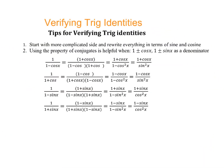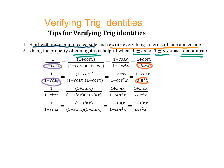Today's lesson is about verifying trig identities. Here are some tips: start with the more complicated side and rewrite everything in terms of sine and cosine. Whenever you see 1 plus or minus cosine x or 1 plus or minus sine x as a denominator, use conjugate multiply to simplify. For 1 minus cosine x or 1 plus cosine x as a denominator, you are supposed to get sine squared x as a denominator after conjugate multiply.